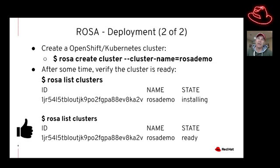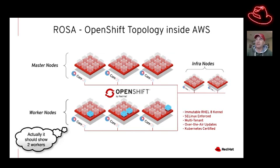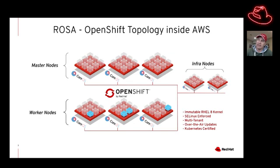At this point you have a full Kubernetes managed service running on AWS. The topology includes three master nodes, three worker nodes, and two infrastructure nodes. Each node runs the immutable RHEL 8 kernel, otherwise known as CoreOS. It has SELinux enforcing enabled, supports multi-tenancy within your AWS account, supports full over-the-air updates managed by AWS, and is fully Kubernetes certified.